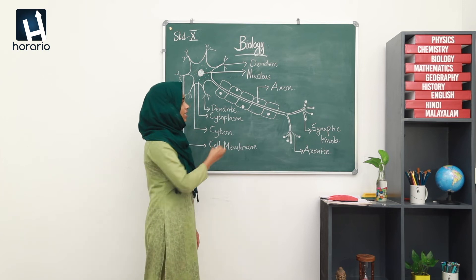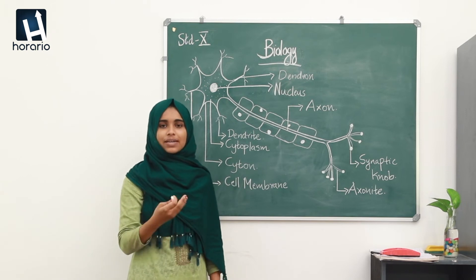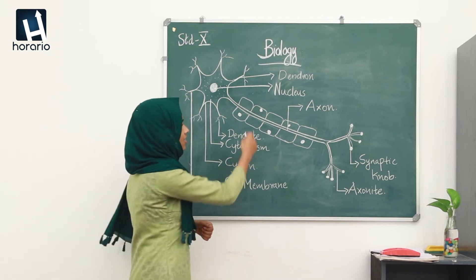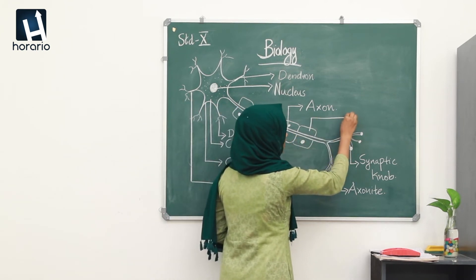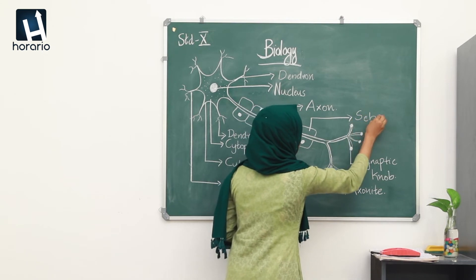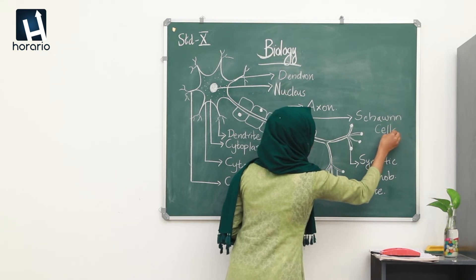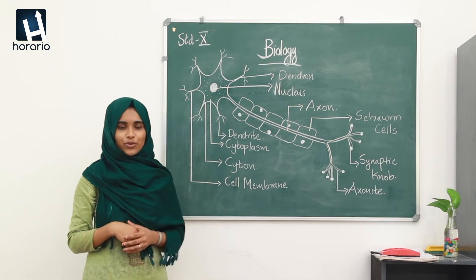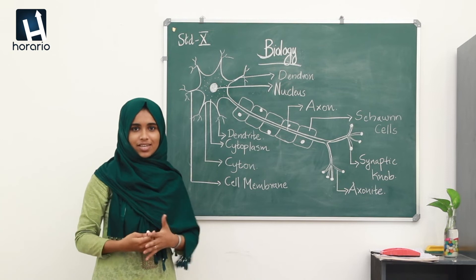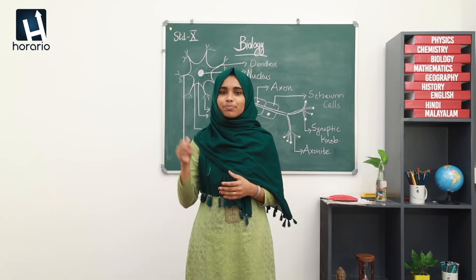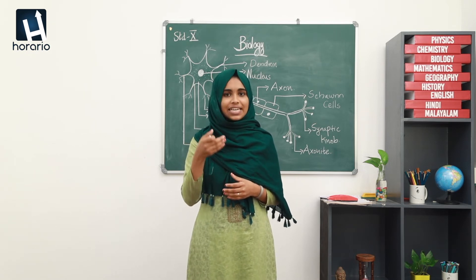You might have wondered about this structure — it is not actually a part of the neuron, but it repeatedly encircles the axon. This is known as Schwann cells. Now we are going to study the function of each part of the neuron in detail.